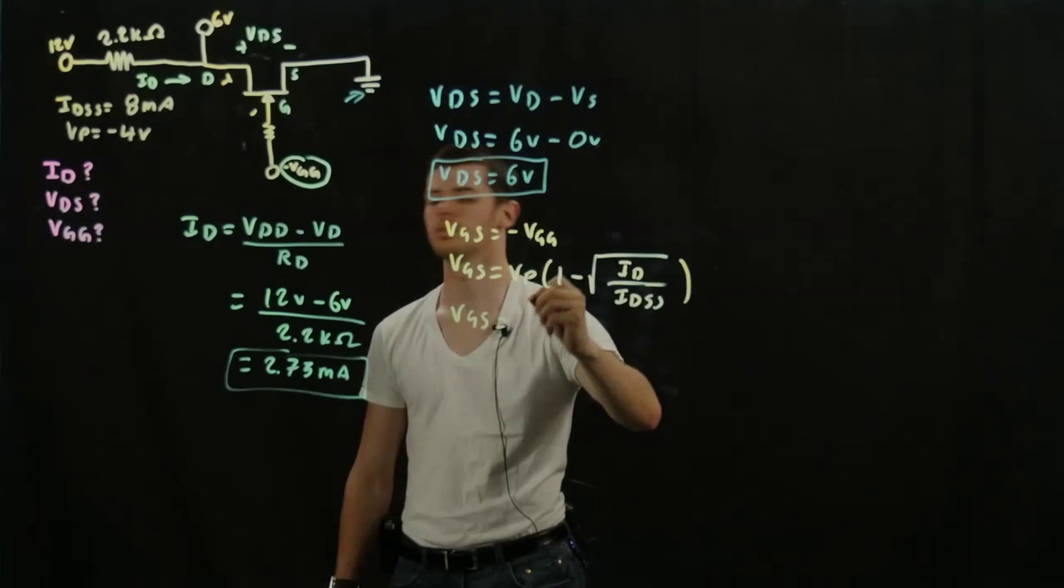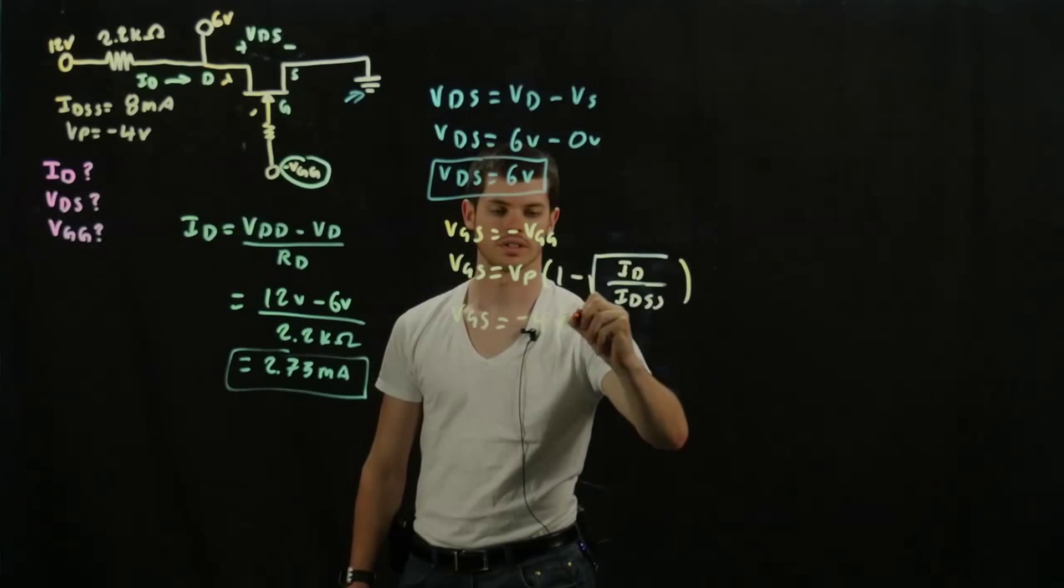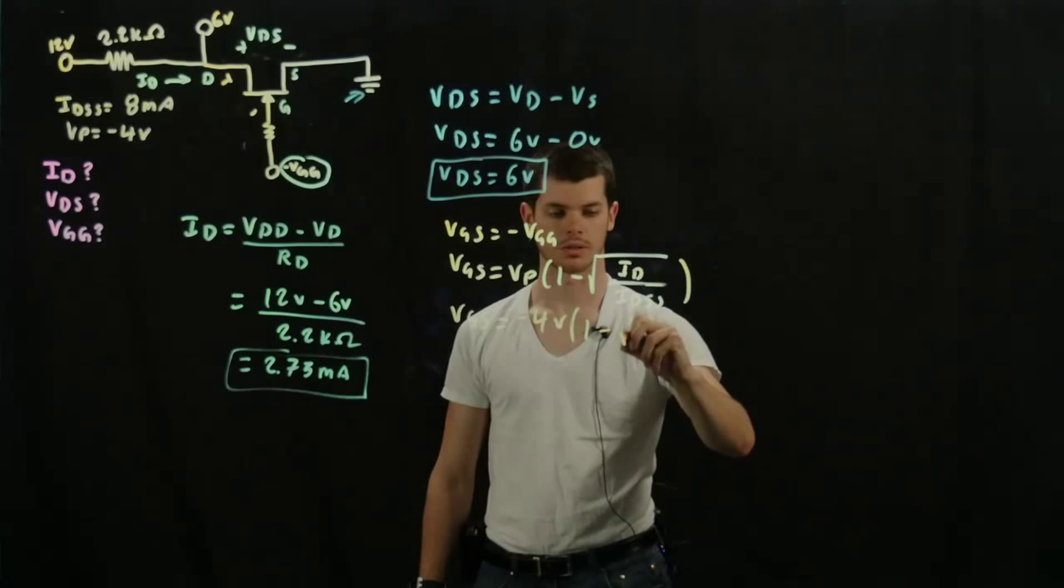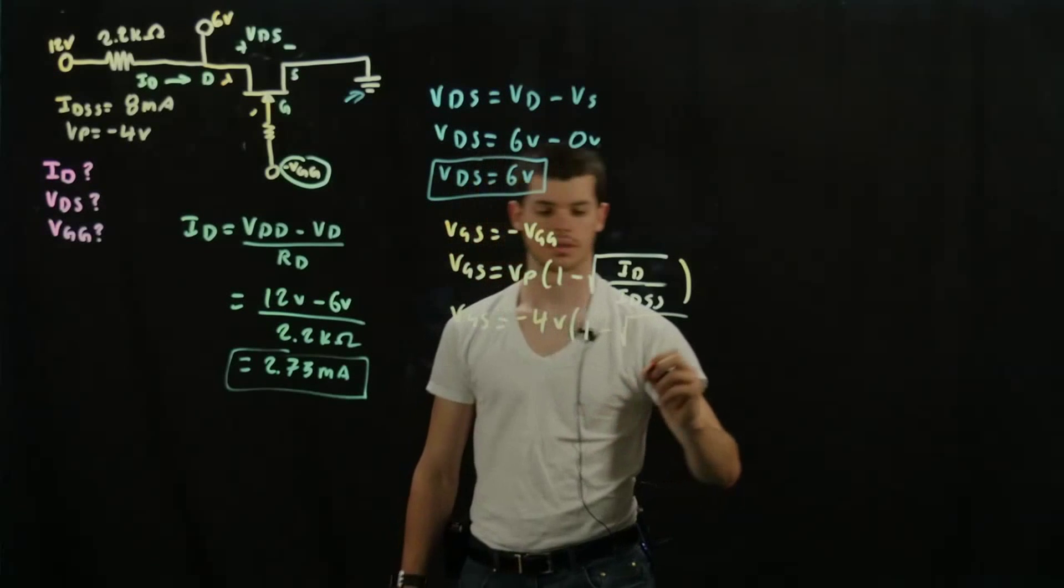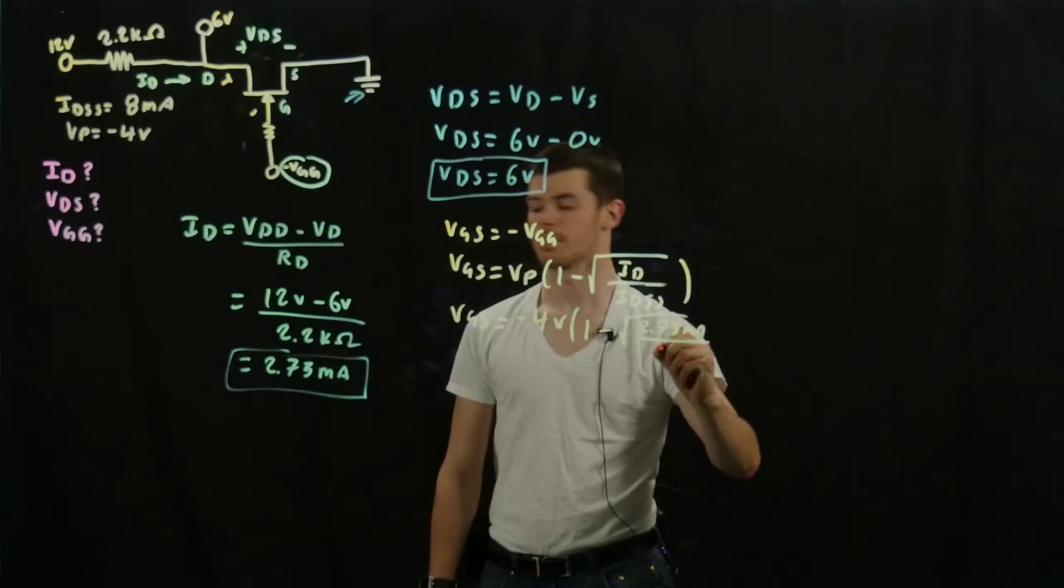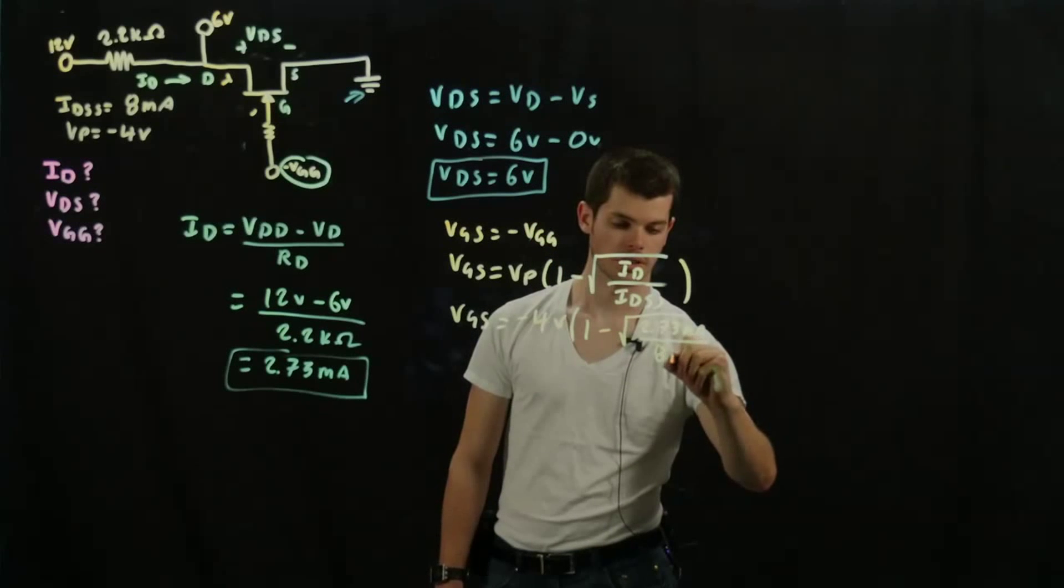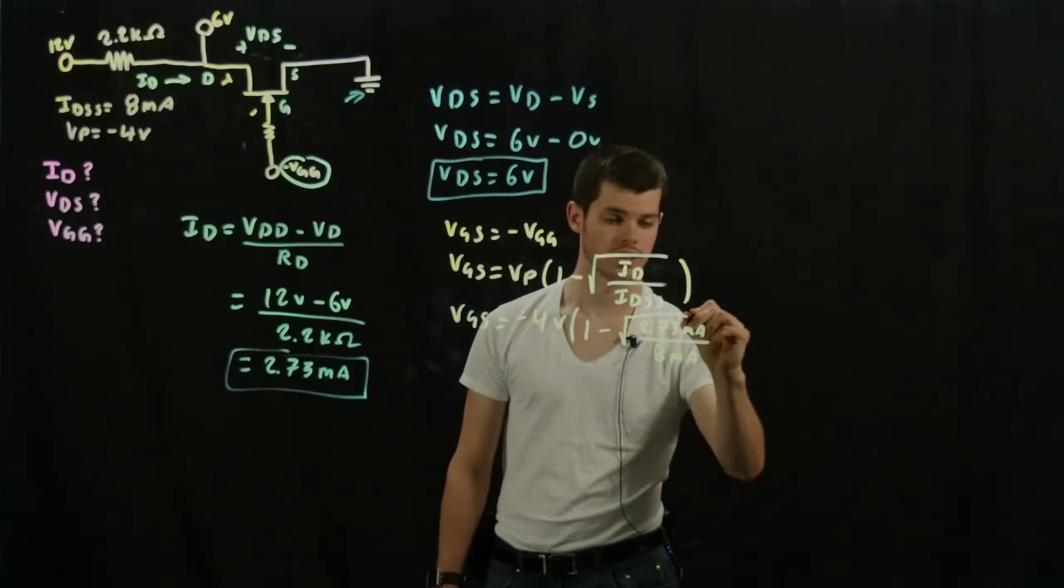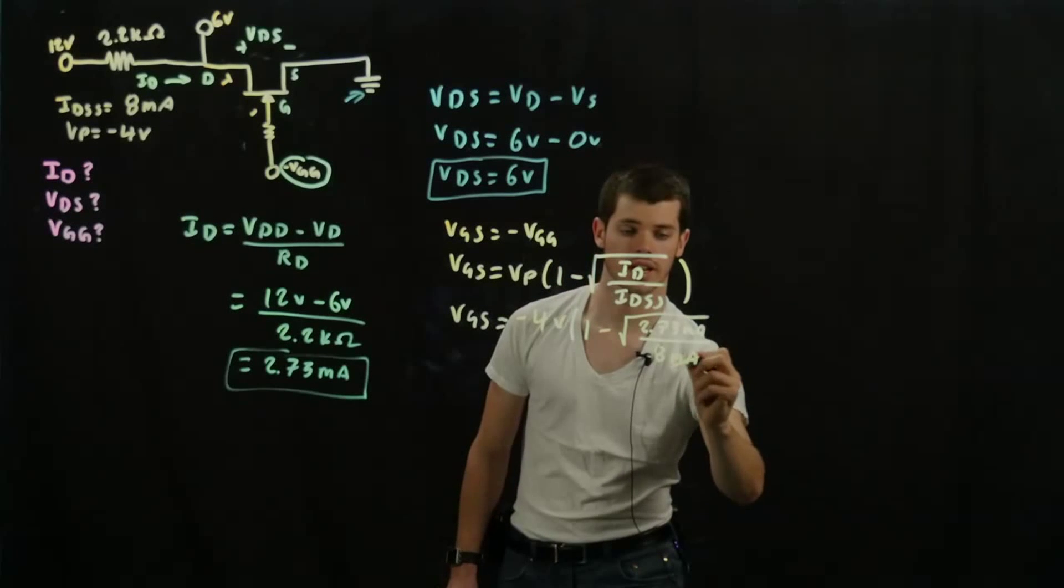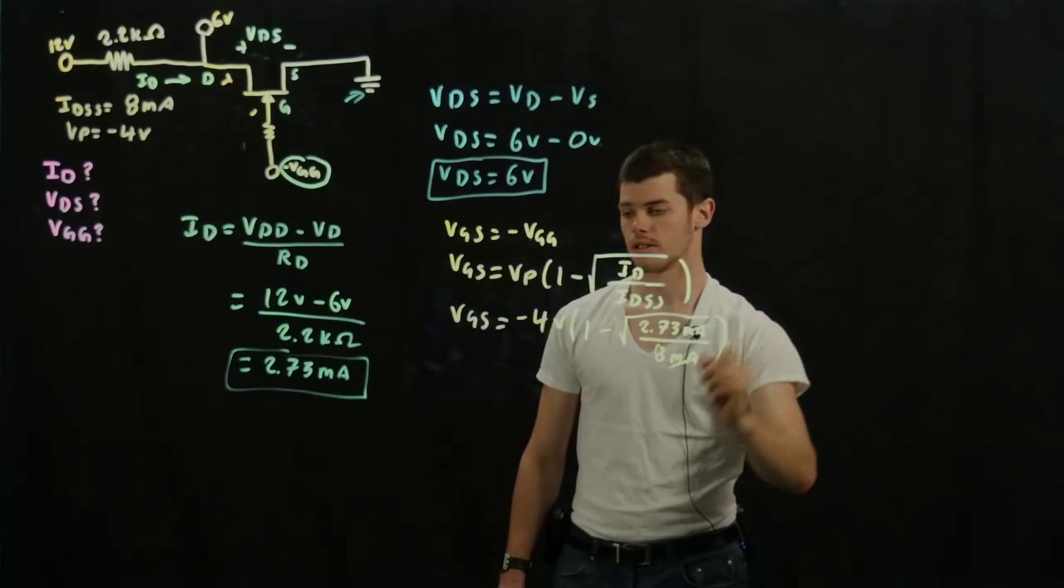VGS is going to be equal to negative 4 volts times 1 minus the square root of ID, which is 2.73 milliamps, divided by 8 milliamps. And so you don't have to worry about converting these for this particular instance to amps, because you have milliamps over milliamps. And so these are going to cancel out.